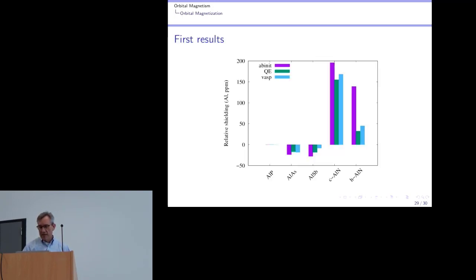Is it the right value? Kind of. So these are the relative shieldings for aluminum compared to what you would calculate in quantum espresso and VASP for several different things. And these are all referenced to aluminum phosphide. So there's aluminum arsenide. Purple is ABINIT. Green is quantum espresso. Blue is VASP. Aluminum antimonide, similar. Cubic aluminum nitride, similar. Hexagonal aluminum nitride, not so similar.